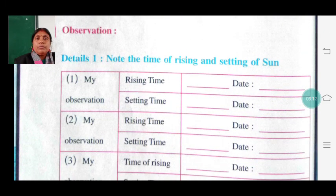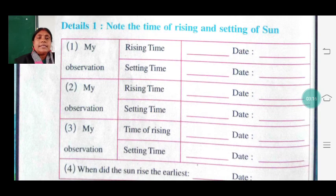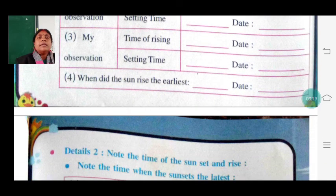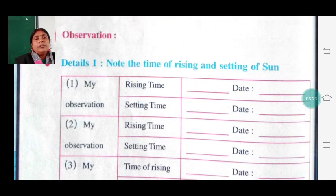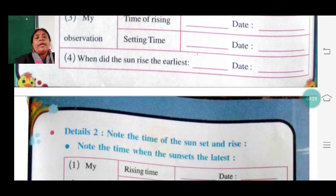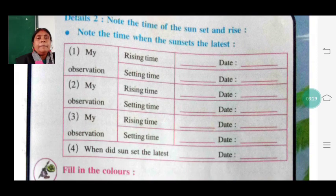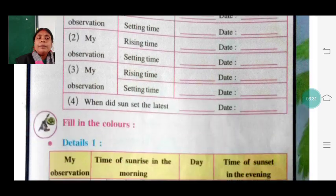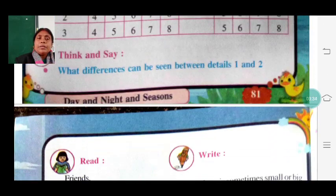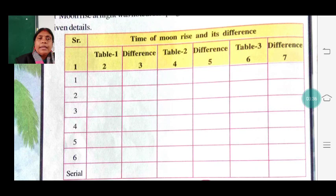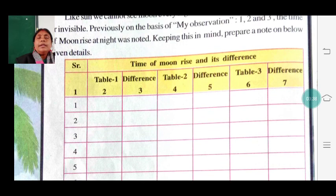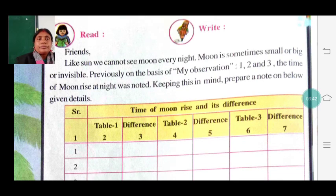See the table: observation 1, observation 2, observation 3. In the month of June — when is the sun rising earliest? Then in the month of September, then in the month of December. There are three observations. You have to write the different sunrise times for each month.